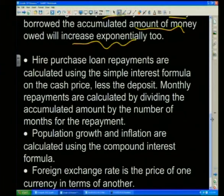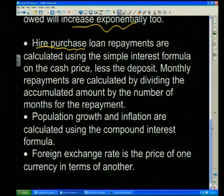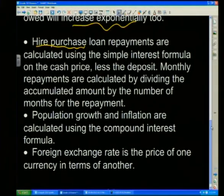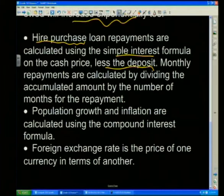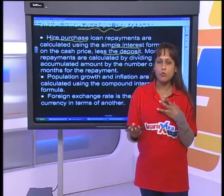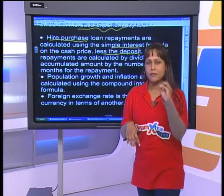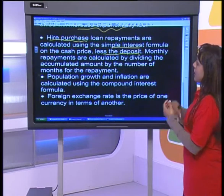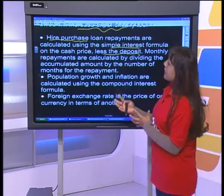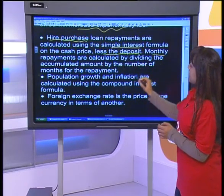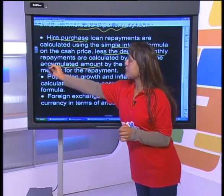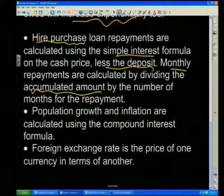We're going to look at hire purchase in more detail today. A hire purchase is a loan repayment calculated using the simple interest formula on the cash price. If a deposit is paid, we subtract that deposit from the cash price: principal = cash price minus deposit. Then we calculate monthly repayments by dividing the accumulated amount by the number of months for repayment.